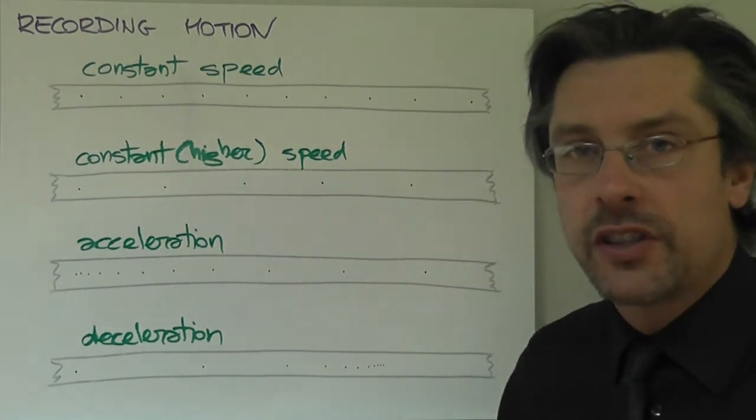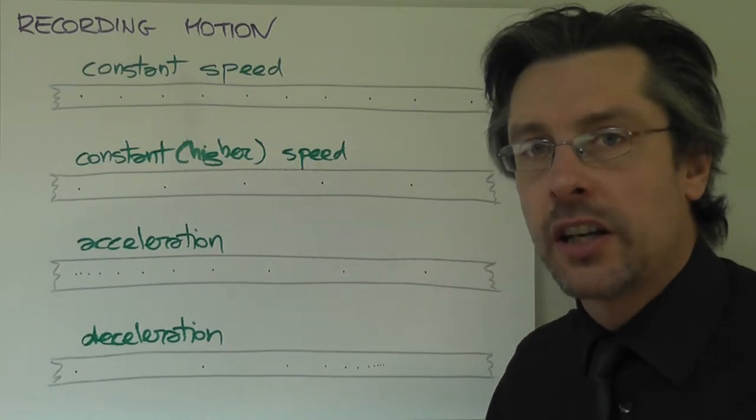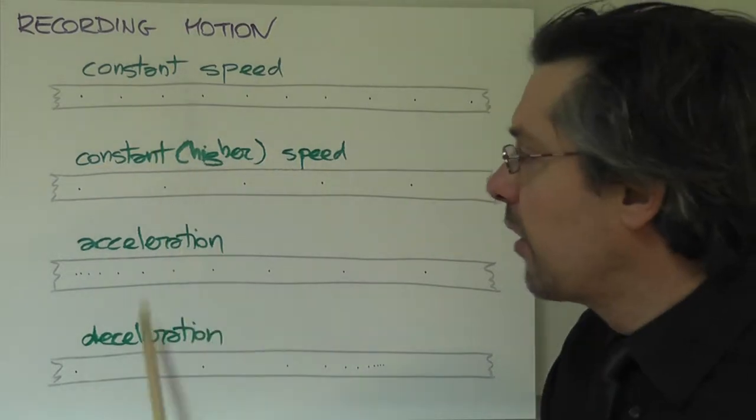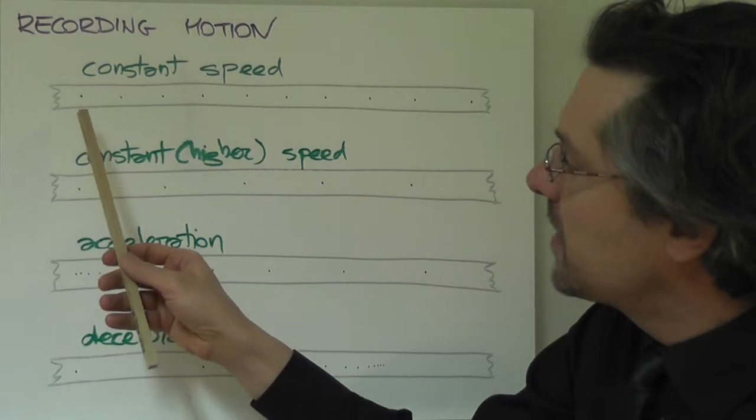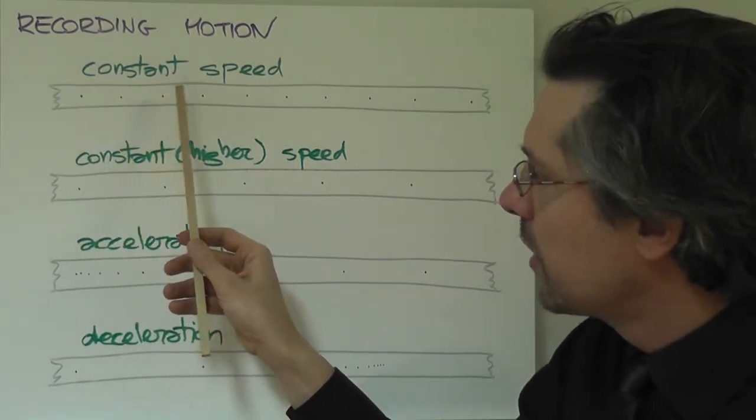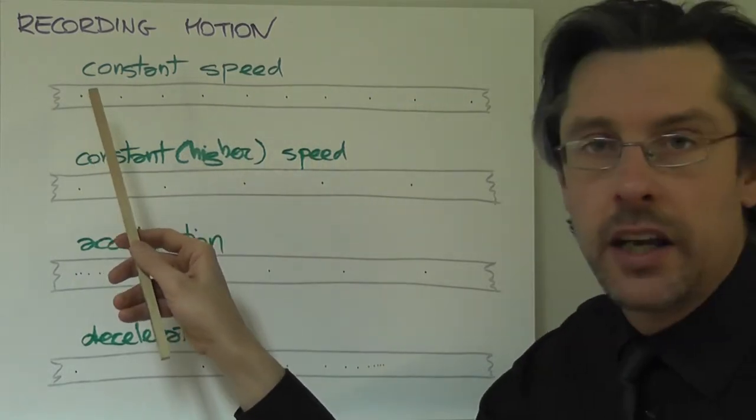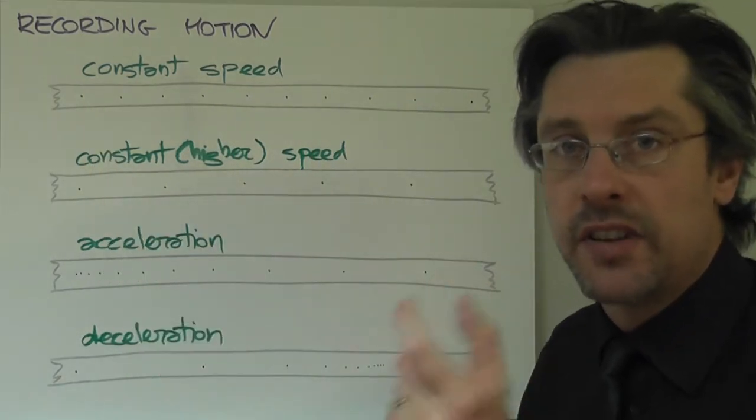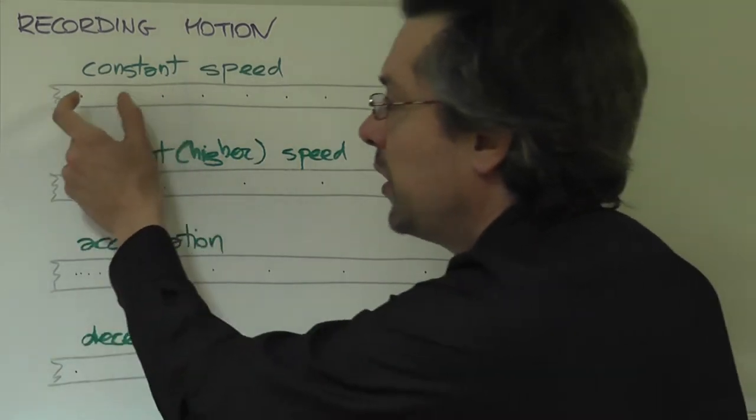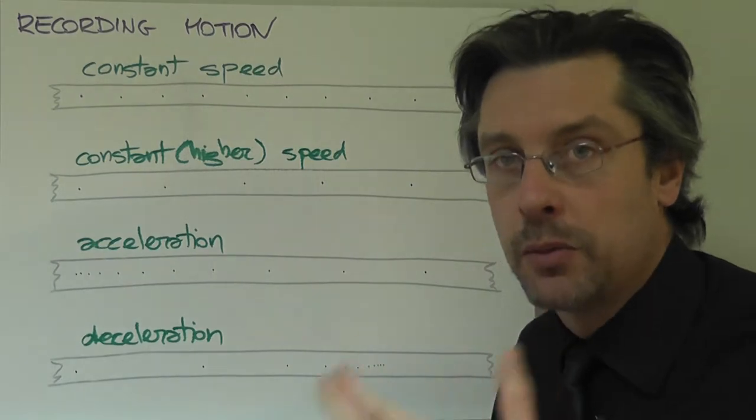But first let's understand what kind of patterns you can find on a ticker timer tape. Here there are four examples. Let's see the first one. In the first one you can see that the dots are evenly spaced. What does it mean? It means that in the same interval of time, because between two consecutive dots there's always the same amount of time,